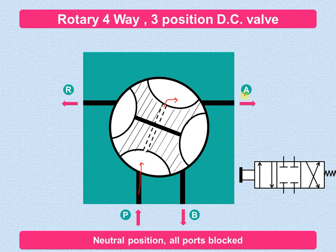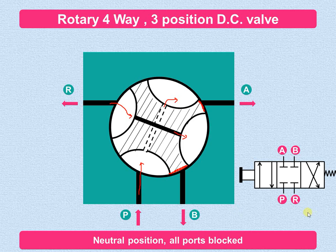The fluid cannot go to port A because this is a block position — the port is blocked by this spool, so it cannot go from P to A. Similarly, if the fluid wants to flow from reservoir port R, it can come up to a certain point but cannot go to port B because it is blocked. Port P is also blocked. So you can say this is the neutral position, where all the ports — P, A, B, and R — are blocked. That is known as the neutral position.